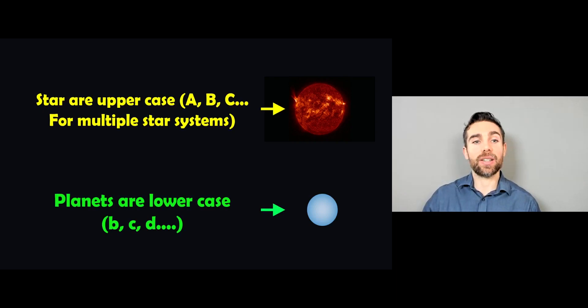It's also worth noting that the star is uppercase. So it would be uppercase A if it was a single star. If it was a double star system or triple star system, then it would be given B and C. But these would be uppercase. The planets are lowercase and it will start from B. So it would be B, C, D, E and carry on depending on how many planets that you have there.